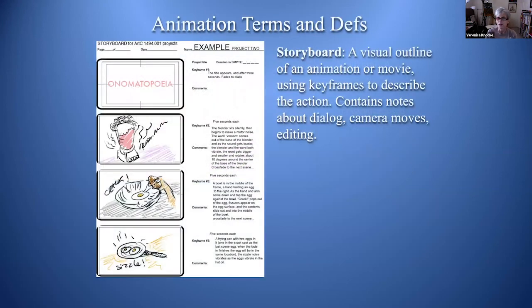A storyboard is a visual outline of an animation or movie using keyframes to describe the action. It contains notes about dialogue, camera moves, and editing.